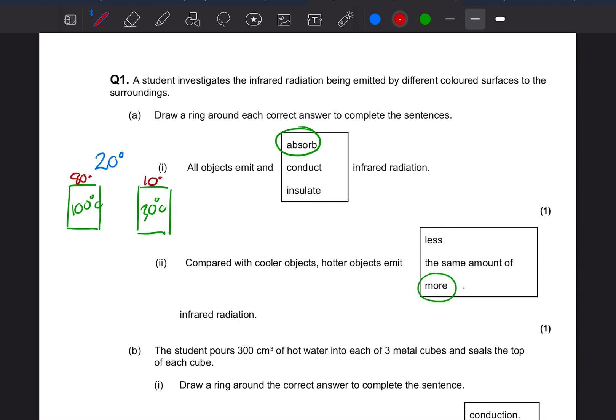So the hotter object, because of this bigger difference, is going to give out more infrared radiation into the surroundings. Whereas this 30 degree object has only got a small difference between the surroundings so it's only going to give out a smaller amount. So compared with cooler objects, hotter objects emit more infrared radiation.